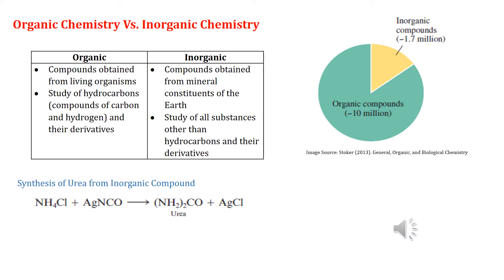You might say that this is unequal partitioning. Yes, it is, but this unequal partitioning occurs because there are approximately 10 million organic compounds and only an estimated 1.7 million inorganic compounds. So you can see here this is an approximately 6 to 1 ratio between organic and inorganic compounds, and this ratio is one reason why organic chemistry is a separate field of chemical study.